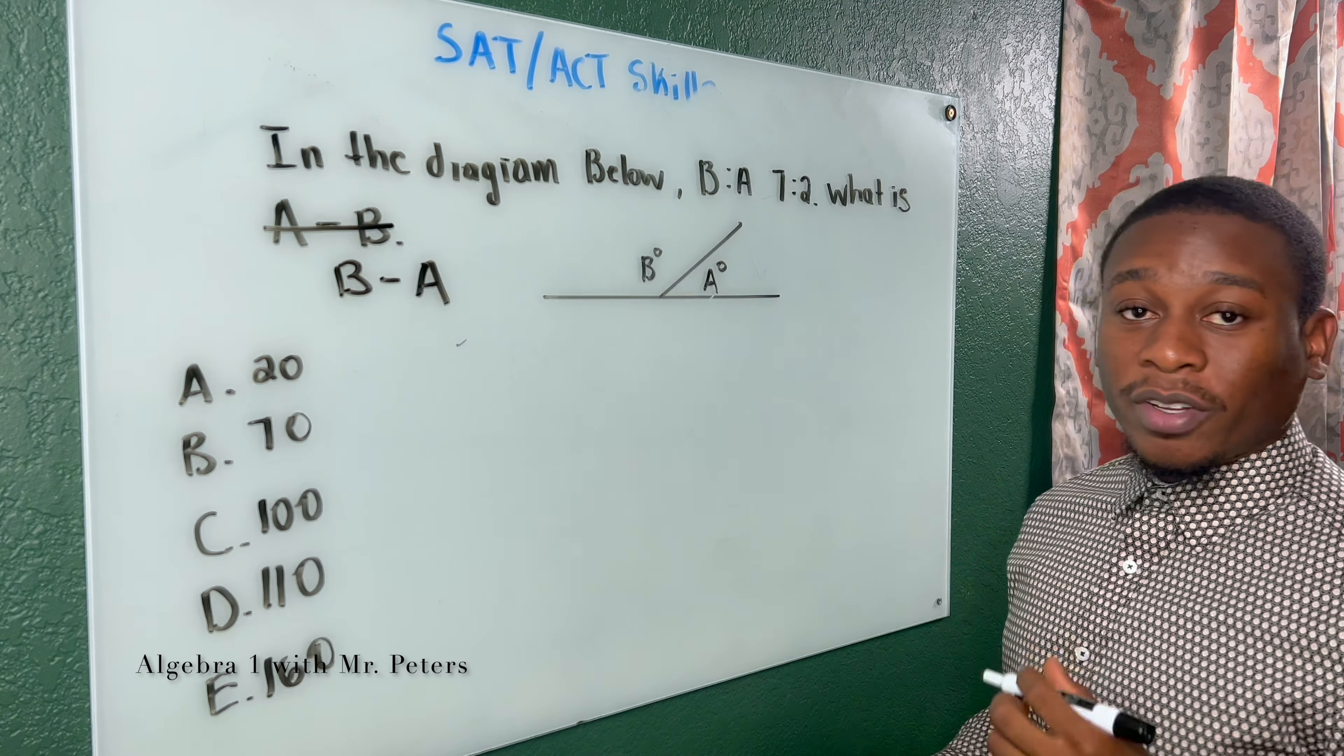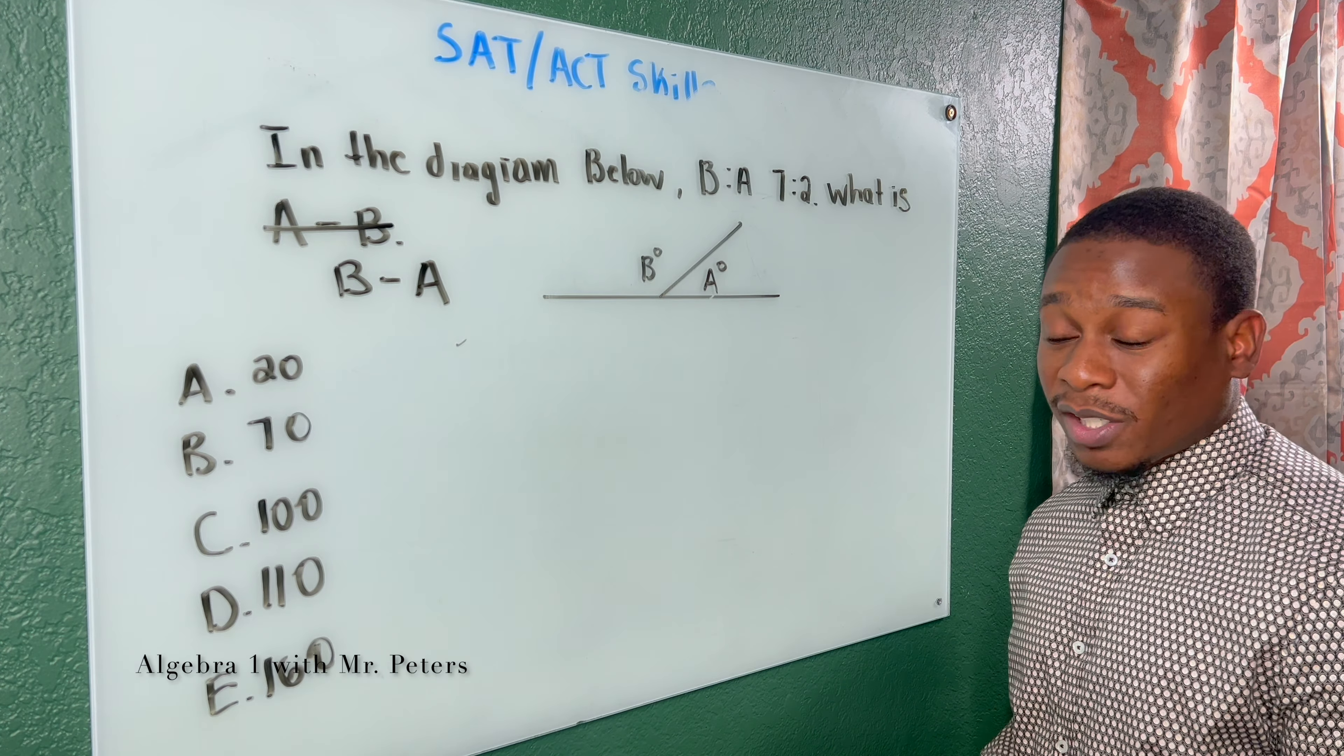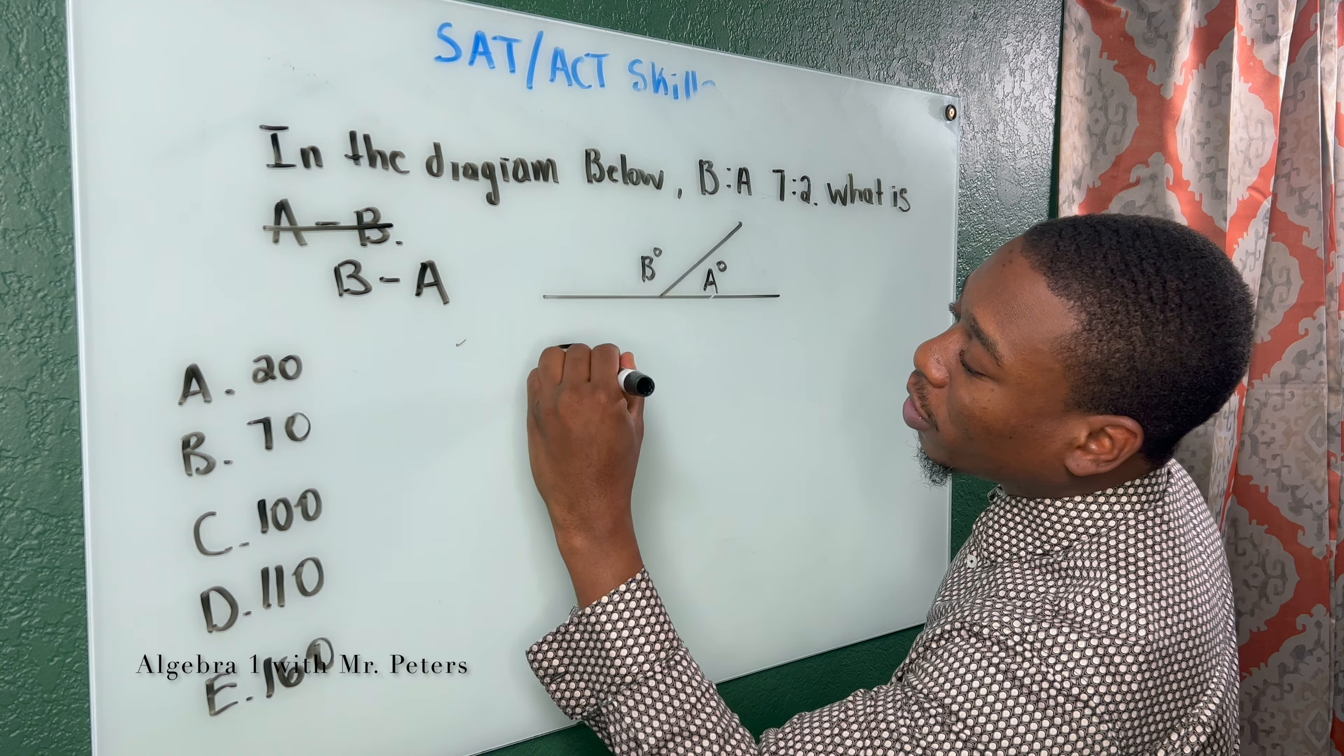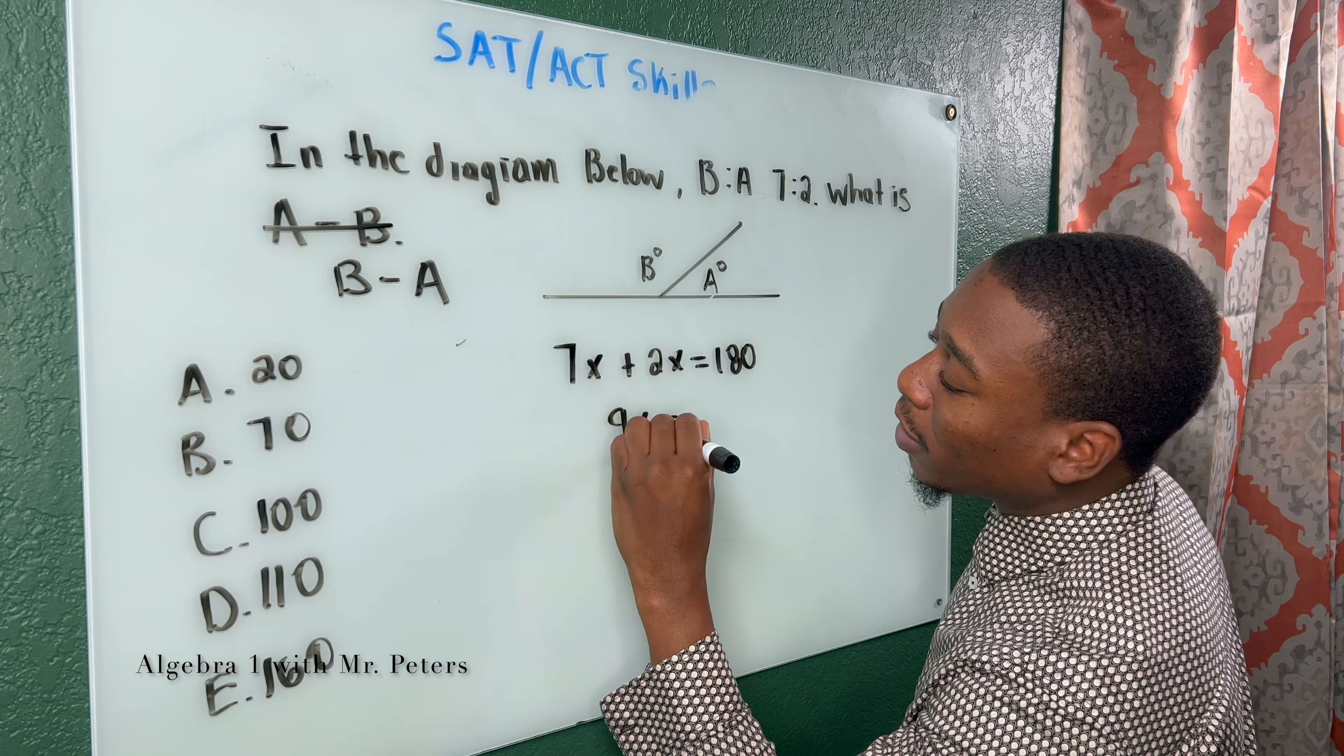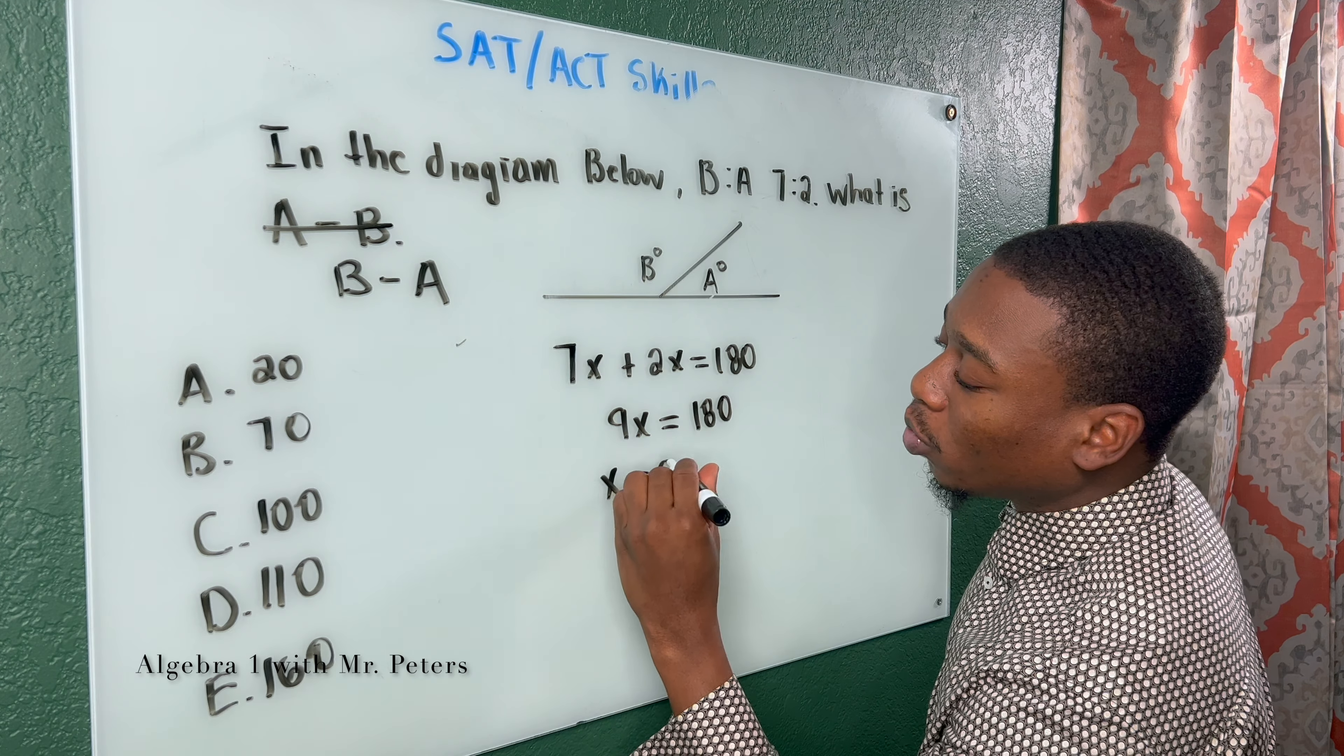So for us to figure this out, we need to know that B plus A is going to equal 180 degrees. That's the measure of all straight lines. So I'm going to create an equation. 7X plus 2X is equal to 180. When I simplify, I'll get 9X is equal to 180. We divide to get X is equal to 20.